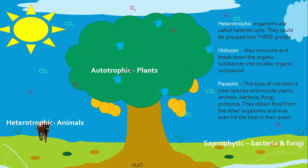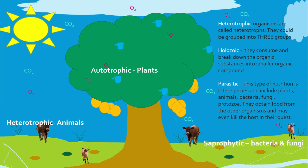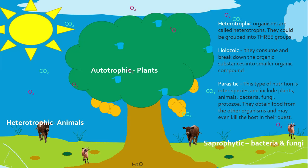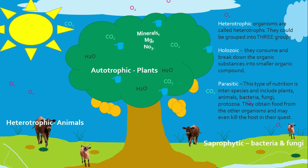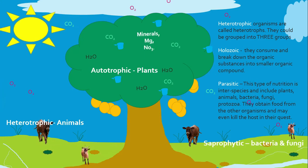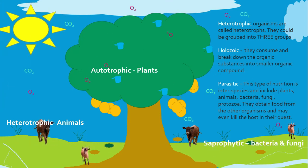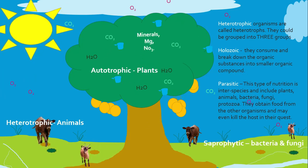However, heterotrophic nutrition can be grouped into three groups: one, holozoic; two, parasitic; and three, saprophytic. Holozoic nutrition is a type of nutrition in which the organism has a five-step sequence to complete the process of nutrition.